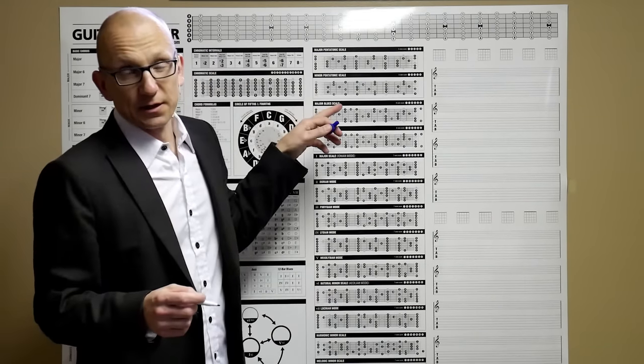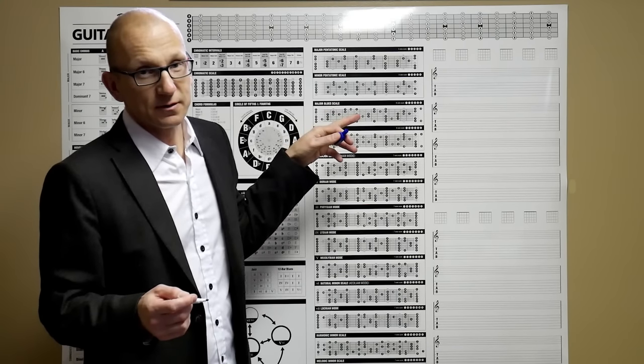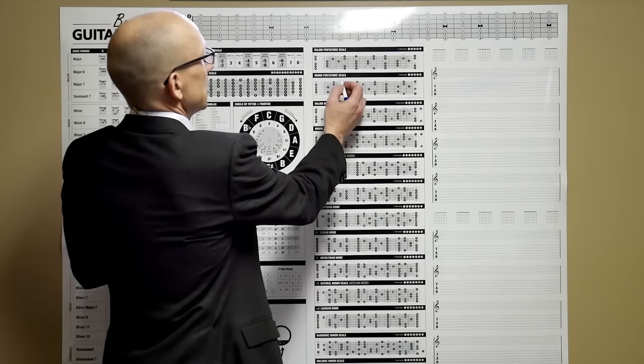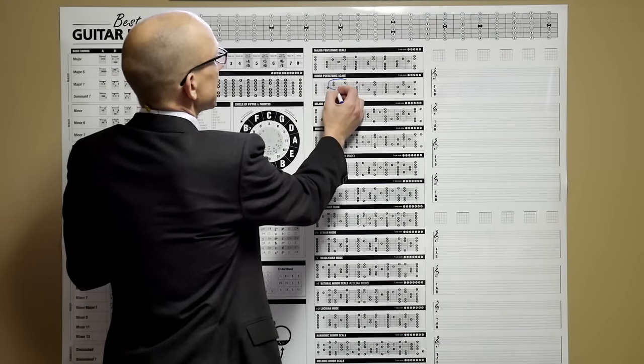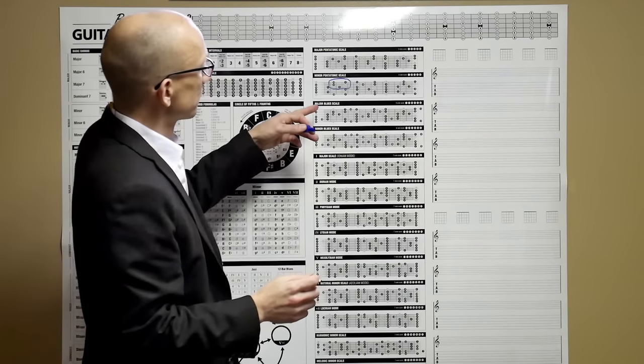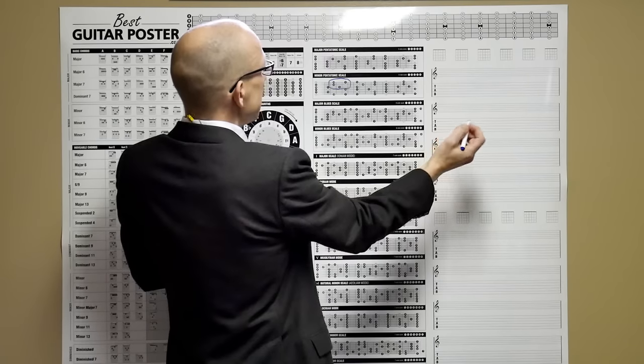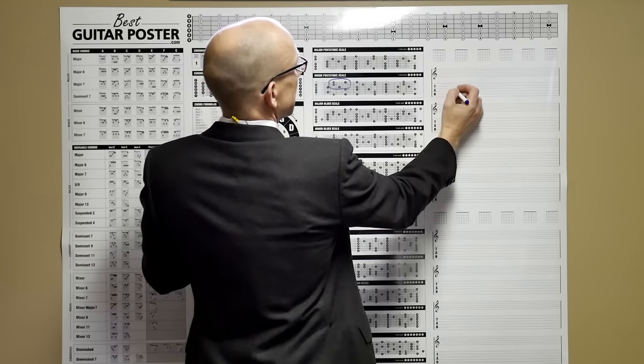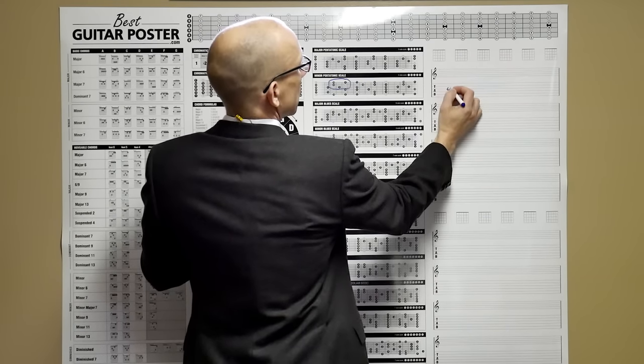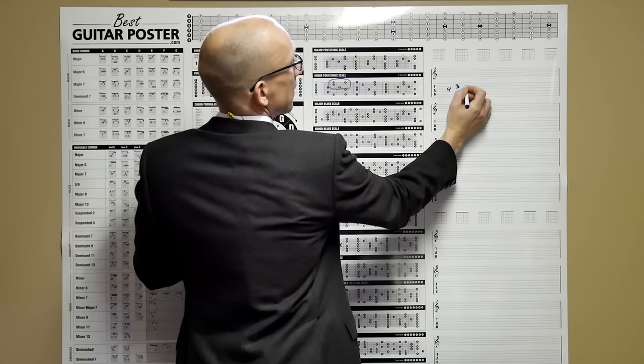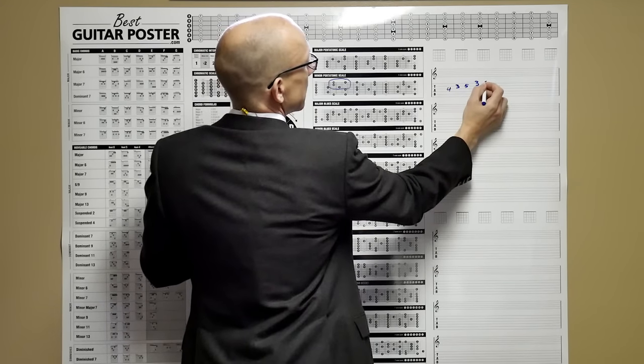Let's say you're working on the BB King blues box of the minor pentatonic scale. You can highlight it like this. And then over here you can write down the notes. Here in the key of E or E minor we're going to be writing 4, 3, 5, 3, 5.